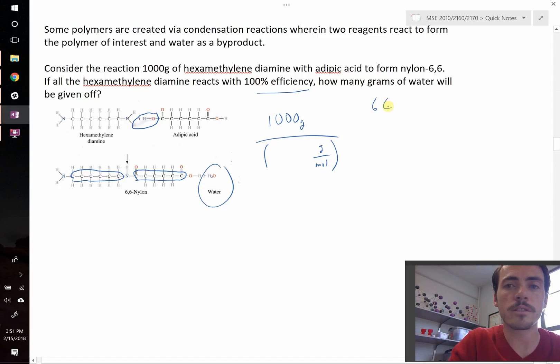There's 6 carbon, there's 2 nitrogen, and there are 16 hydrogen. When you add up all those, remembering that carbon has 12.01 grams per mole,